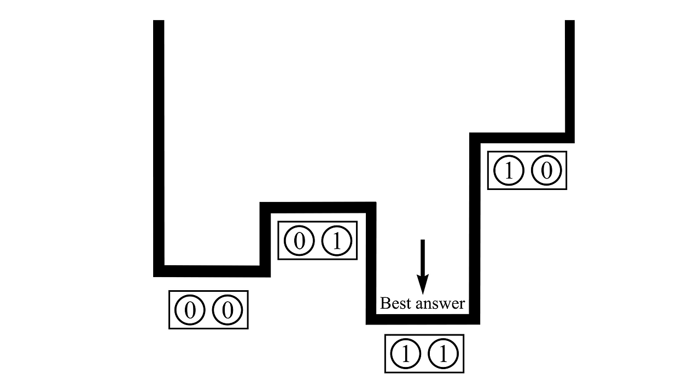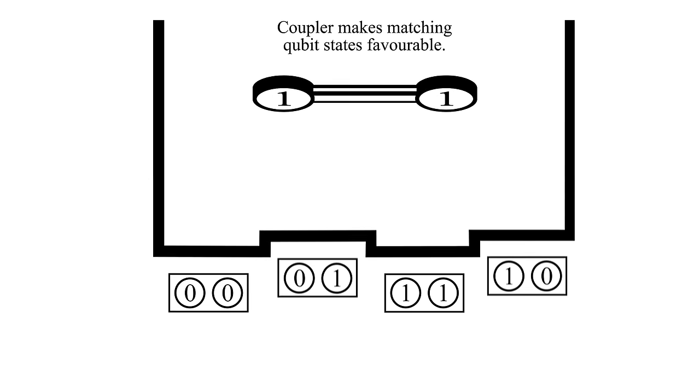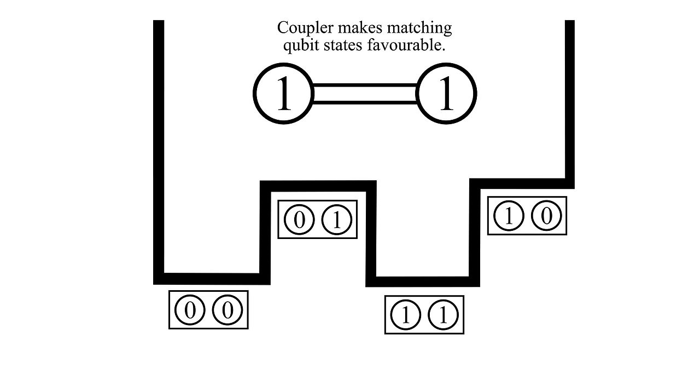The relative energies of these states depend on the biases on each qubit and the coupling between them. When I said that the coupler wants the qubits to be the same or wants them to be opposite, what I really mean is the couplers are making those states energetically favorable. So if the coupler wants the two qubits to be the same, what it's doing is lowering the energy of those two states in comparison to the other states.